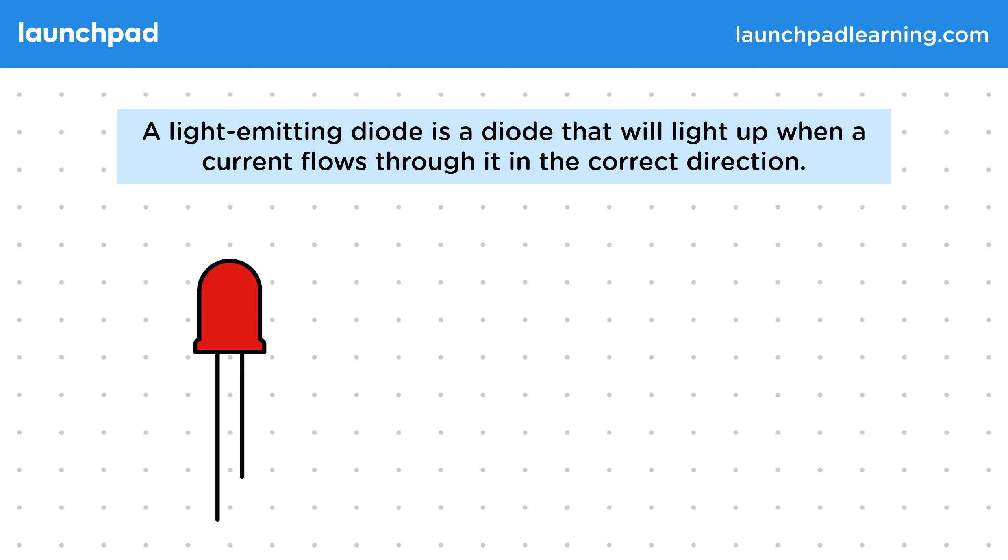Here's what this type of diode would look like. They're most commonly red but can be made in all sorts of different colours.